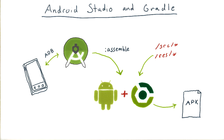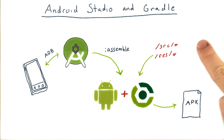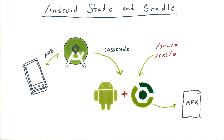The one thing it doesn't have, however, is an integrated build system. Android Studio delegates the entire build process to Gradle — that's everything that happens to turn your sources and resources into an APK that you can install on your device. Gradle itself doesn't inherently know anything about Android; that capability is provided by Google in the form of an Android Gradle plugin.